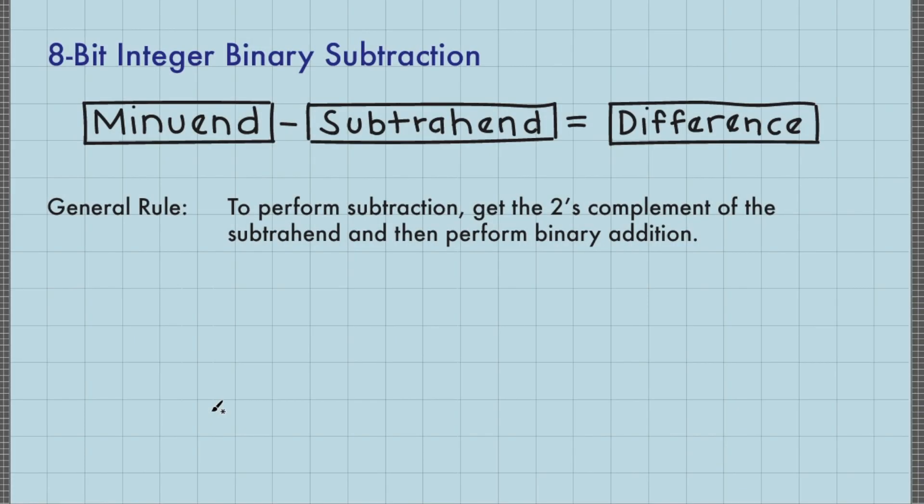When you perform subtraction, the number from which another number is subtracted is called the minuend, and the number being subtracted from the minuend is called the subtrahend.